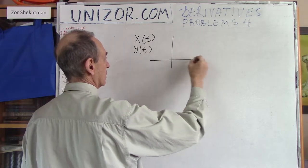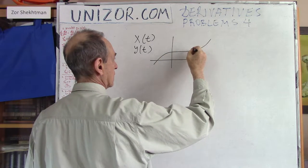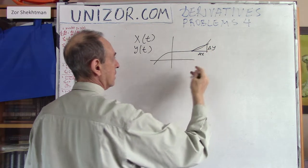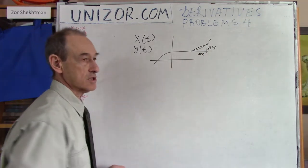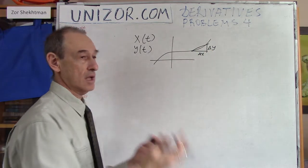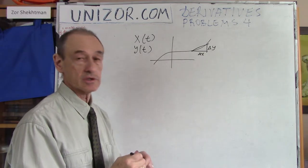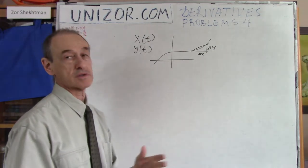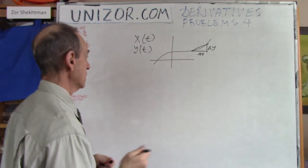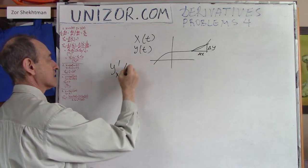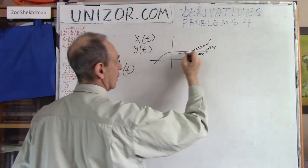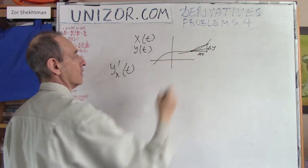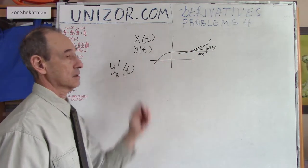Well, if you have a trajectory, this is delta y, this is delta x, and as these two points get closer and closer, the ratio becomes the tangent of the tangent line at that particular point. So you know what the first derivative of y by x is — it's a tangent of the tangent line at the point characterized by parameter t.